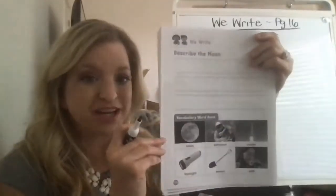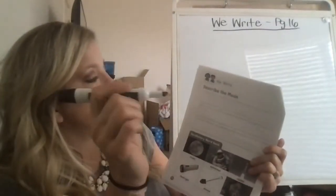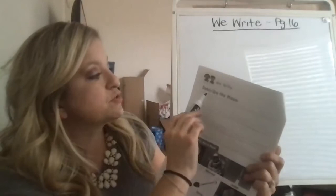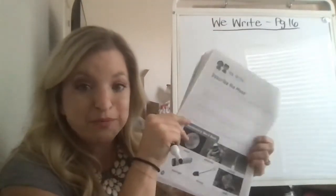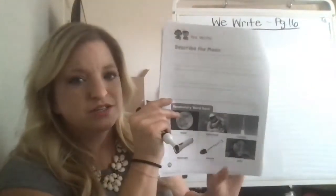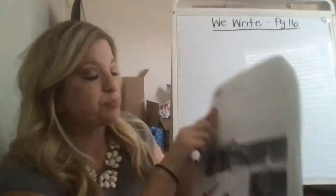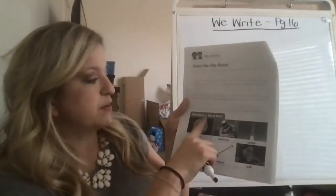Today we're doing We Write, and we're in our packets on page 16. Everybody has this packet. It says We Write and there are two friends writing with pencils. I'm using markers so you can see, but you should be using a pencil when you write. Describe the moon — yesterday we read about the moon, so now we have to describe it. Hopefully you remember some things from our reading yesterday about what the moon is like. The bottom half has the vocabulary word bank.